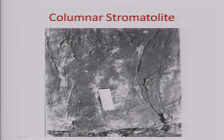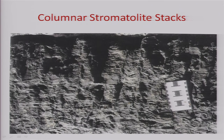In contrast to the domal type, here are stromatolite columns — you can see the margin of the column and they tend to get divided into branches. This is the normal shape of a columnar stromatolite which at the upper end gets branched. So you can have a straight column here, or it could be a branching column.